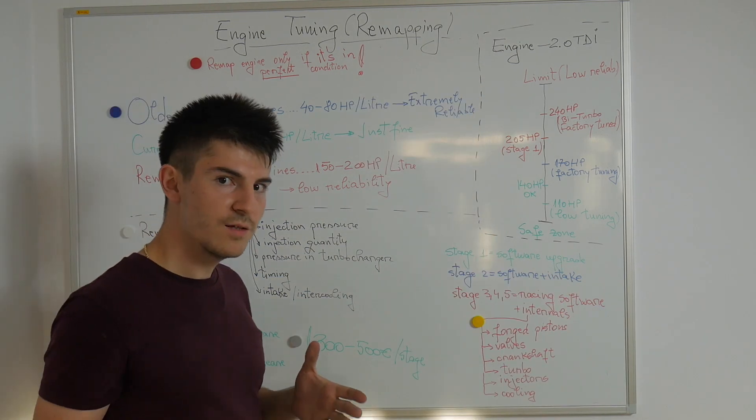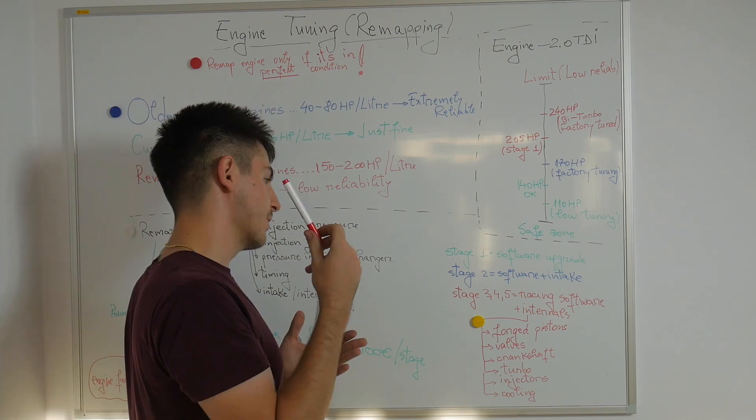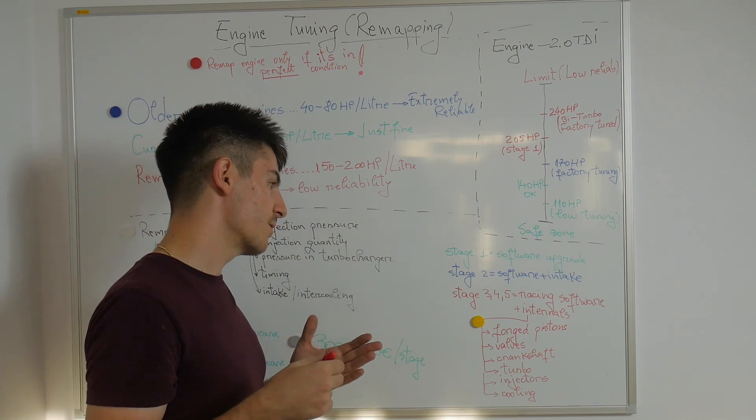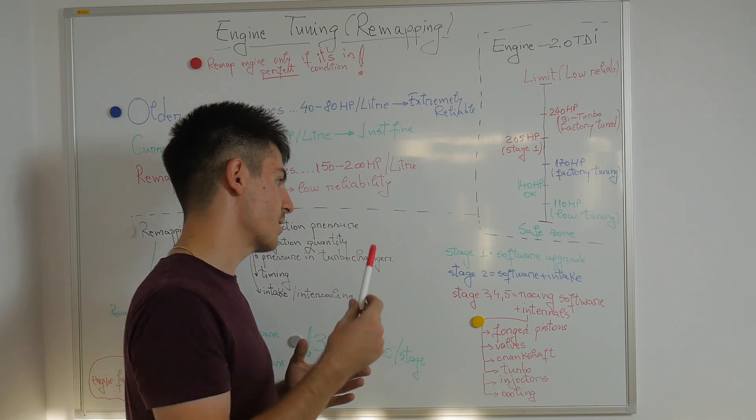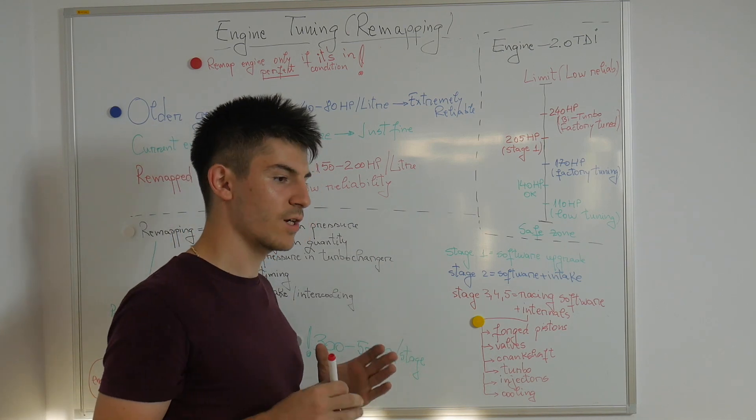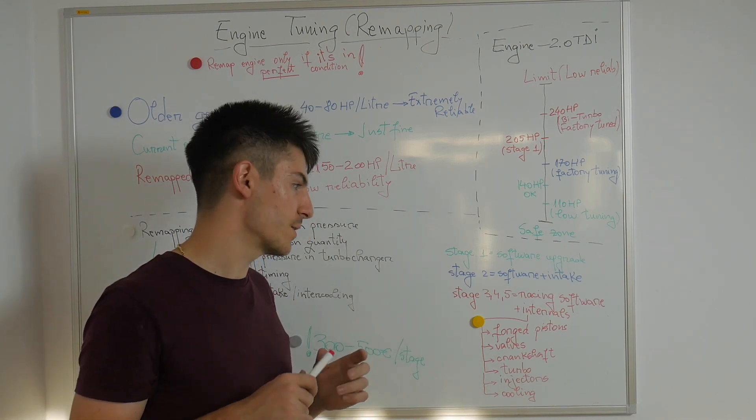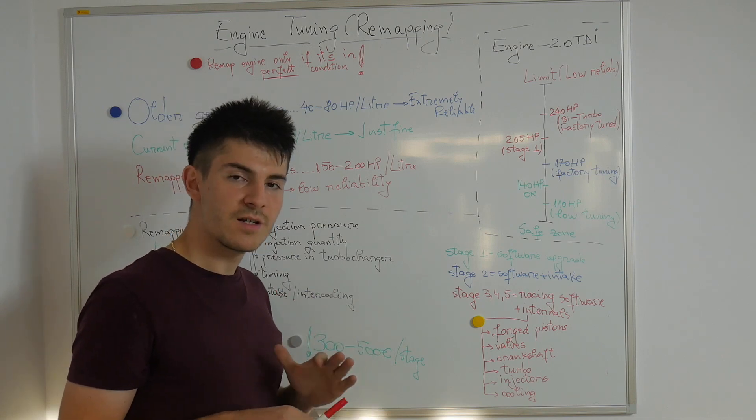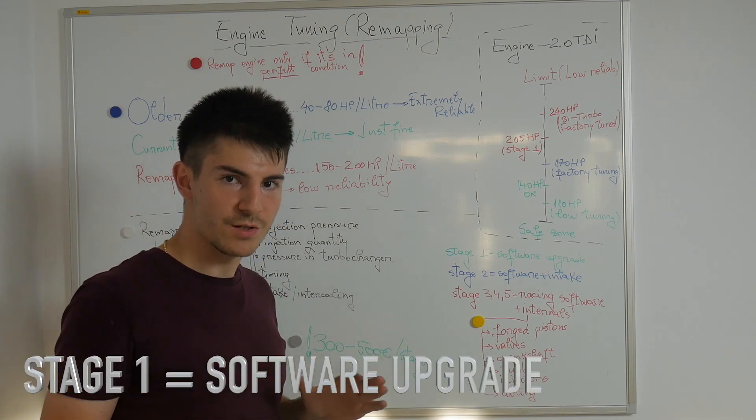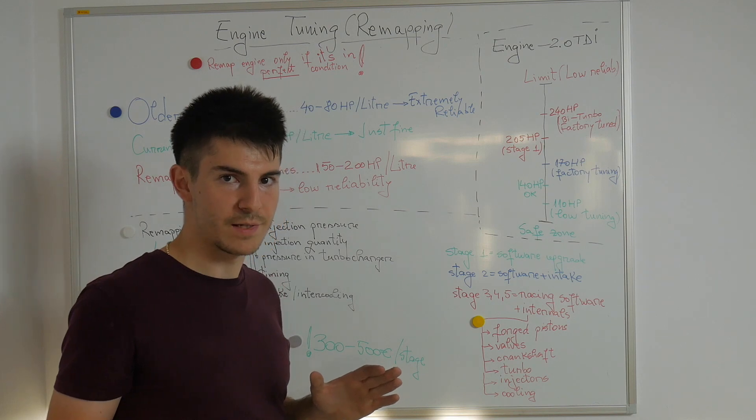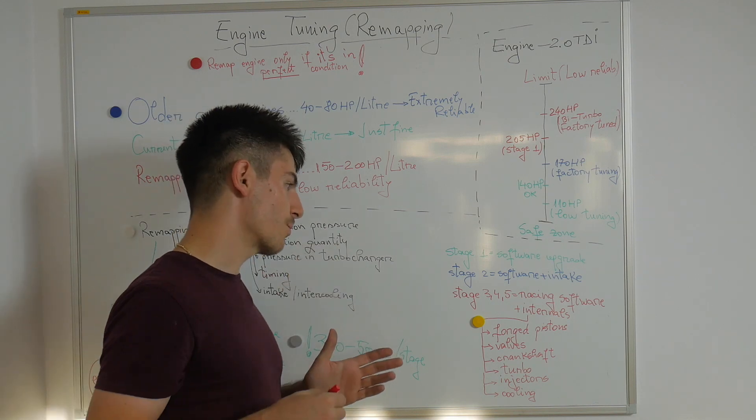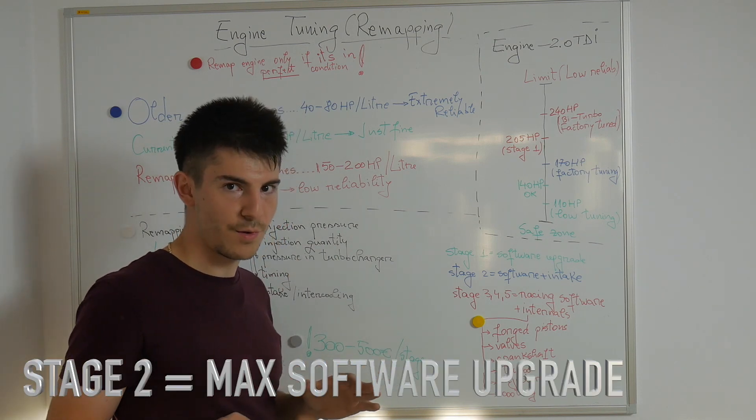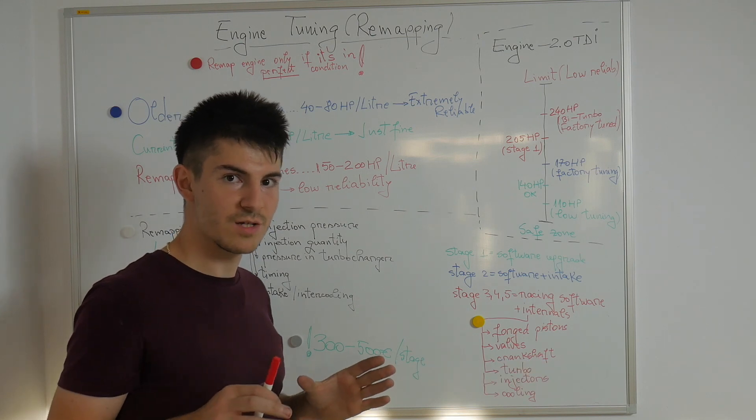Now what kind of remapping can we do to our engines? The most friendly kind of remapping that we can do to our engines is stage one, which is just a software upgrade. We don't need to change anything inside the engine, no internals, no physical components need to be replaced. In stage two we upgrade the software to the maximum point and we should also change the intake.